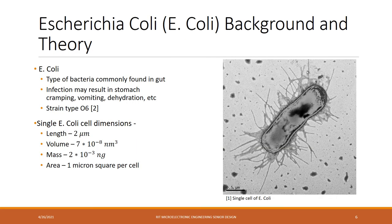E. coli is a rod-shaped bacteria which can induce vomiting, dehydration, and in extreme cases death. For the purpose of the test, the strain used was O6, which is not typically associated with E. coli outbreaks or death. An E. coli cell is pretty small with a length of about 2 micrometers and a mass of 2 times 10 to the negative 3 nanograms, or about 2 picograms, with an area of about 1 micron square per cell. On the right you can see an image of a single cell of E. coli.